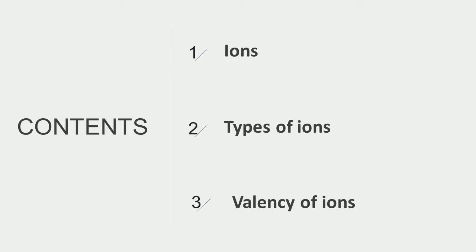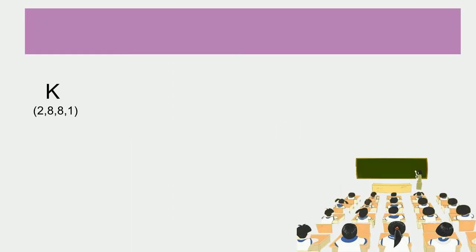We know that atoms can lose or gain electrons to become stable, or to acquire nearest noble gas configuration, or to complete their octet. For example, potassium with atomic number 19 has electronic configuration 2, 8, 8, 1. To have 8 electrons in its last shell, it can lose 1 electron, and after losing 1 electron, it will acquire 1 unit positive charge on it.